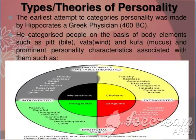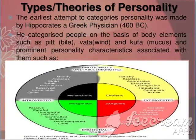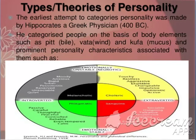Hippocrates categorized people on the basis of body elements such as Pitta, Vata, and Kapha, and prominent personality characteristics associated with them. Vata is the energy of movement. Pitta is the energy of digestion or metabolism. And Kapha is the energy of lubrication and structure — it forms the body's structure.